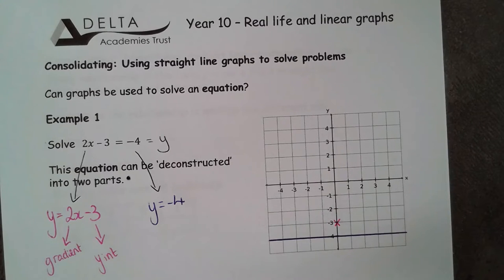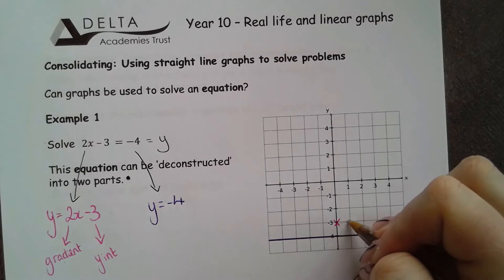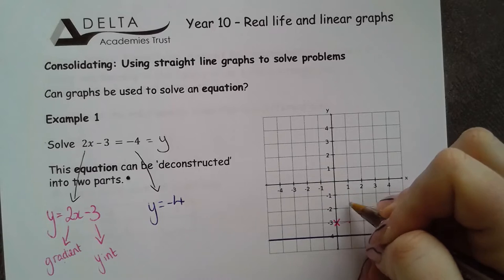It crosses through negative 3 and this gradient means for 1 across I go 2 up. So I'm going to go 1 across and 2 up.